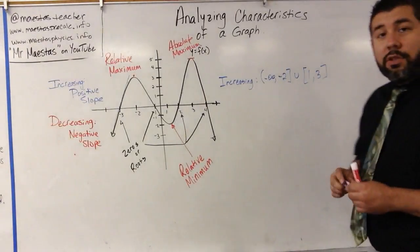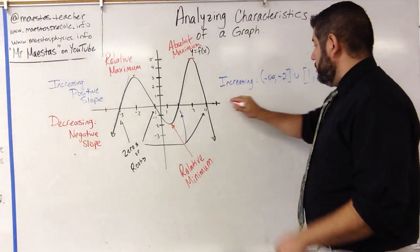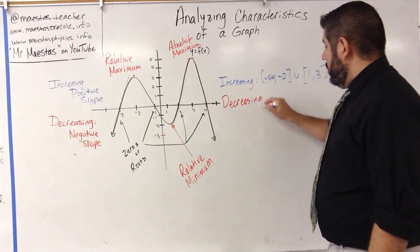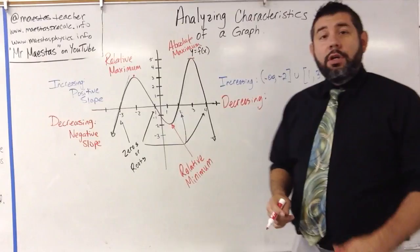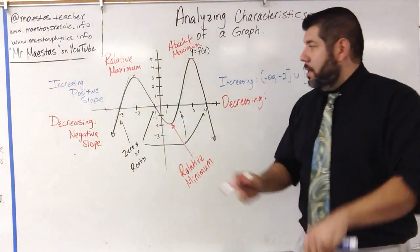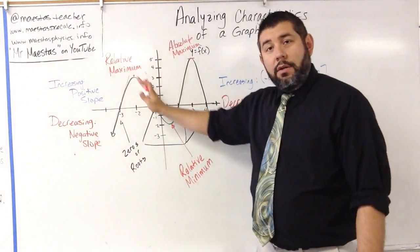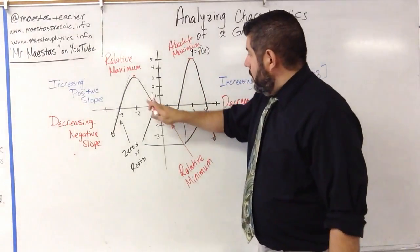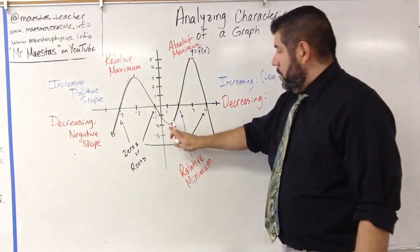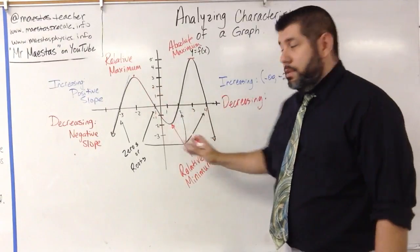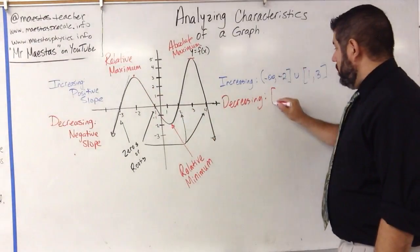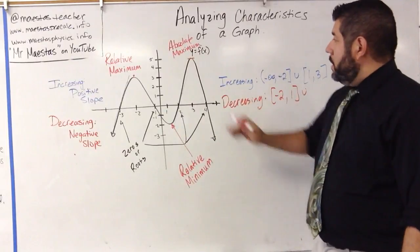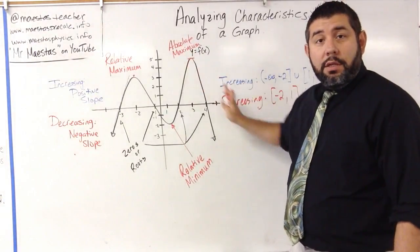Now let's look at where it's decreasing — where the slope is negative. From negative 2 to 1, we have decreasing slope, so negative 2 to 1. And we also have decreasing slope from 3 to infinity.